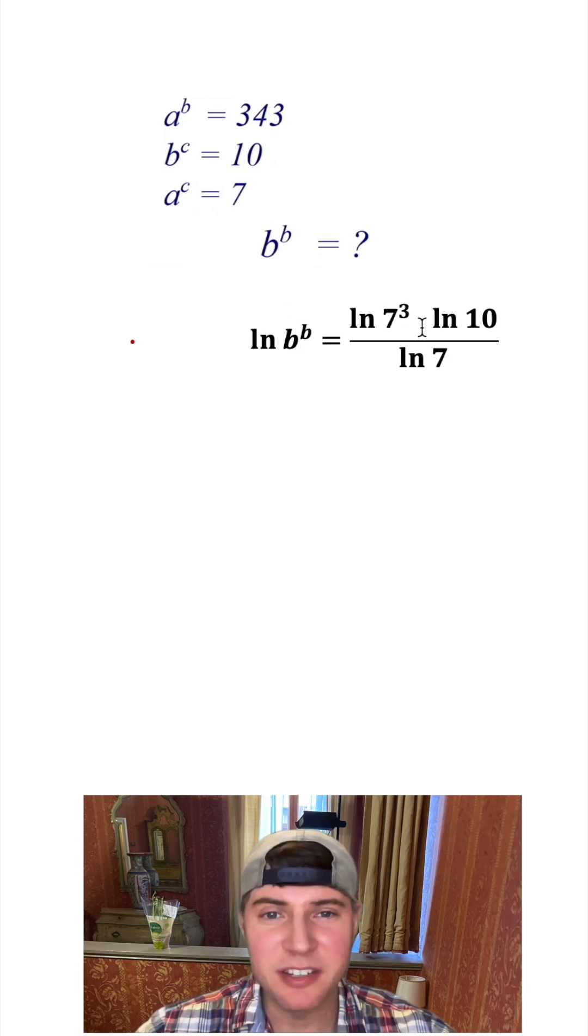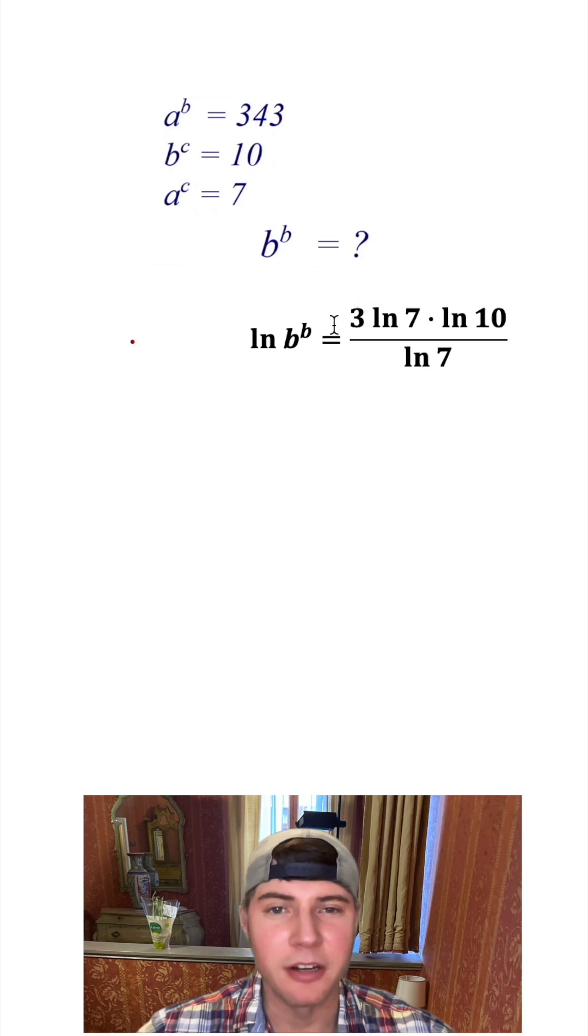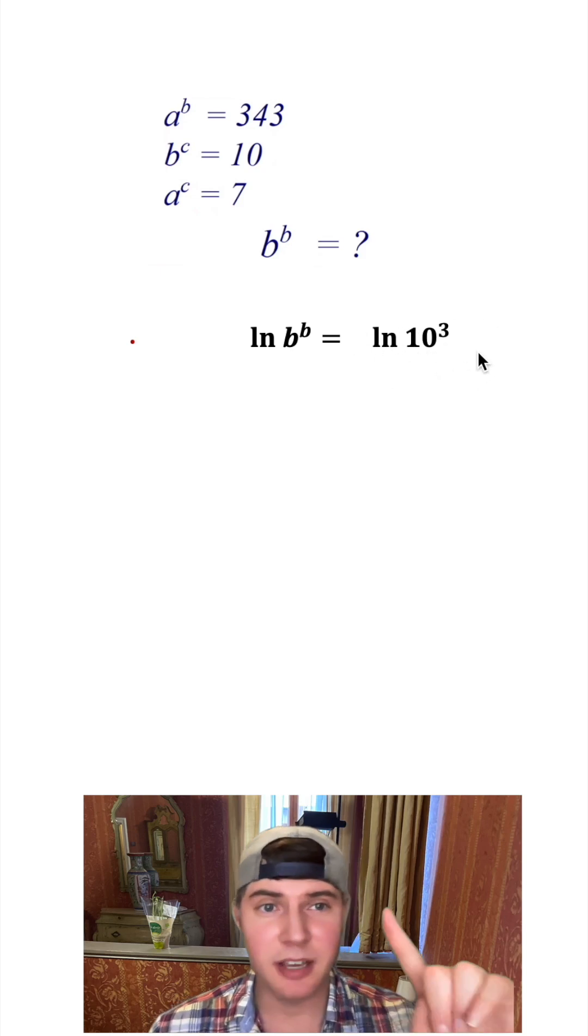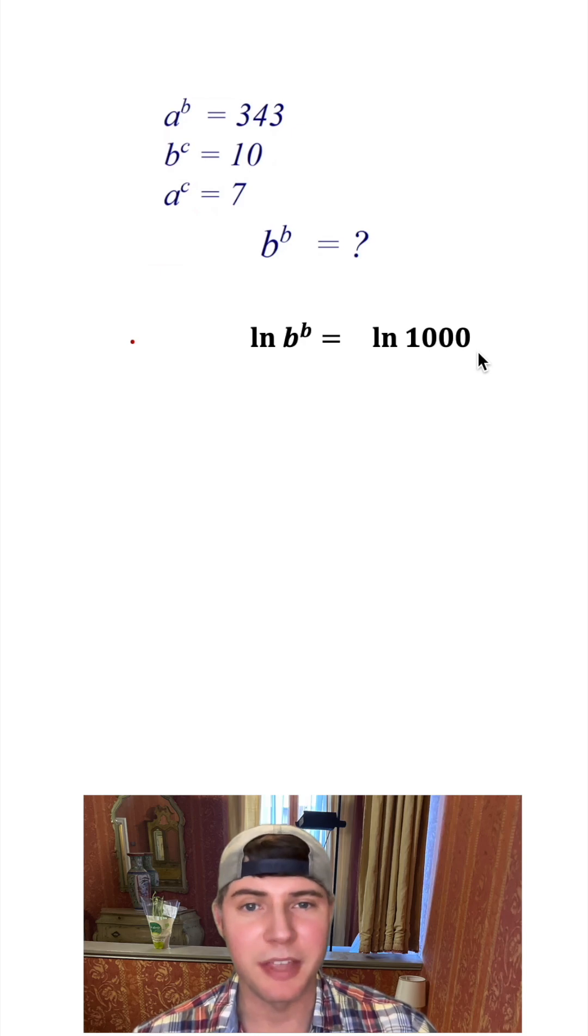This 343 can be rewritten as 7 cubed, and I can bring the 3 to the front. These natural log of 7s can cancel each other out, so I'm left with 3 natural log of 10. Well, this 3 can be brought up here, and 10 cubed means 10 times 10 times 10, which is 1,000.